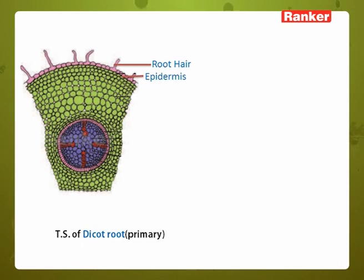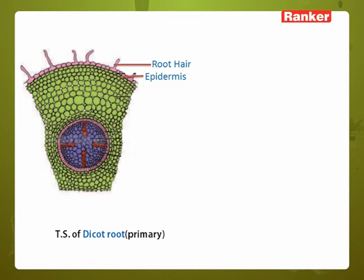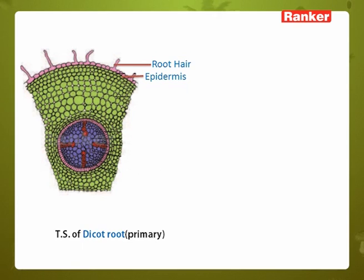The second most layer is epidermis. Epidermis is the outermost protective layer. Rectangular cells are there. It is also called as exodermis and also called as epiblema, and it is acting as an outermost protective layer. In epidermal cells, two types of cells are present: first are the root hair cells, and second are the epidermal cells which are helpful in giving protection to the plant body.